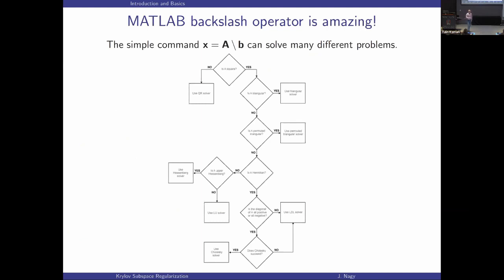I don't know if anybody's seen this before — it's the backslash flowchart from MATLAB. I love backslash because it does so many different things. You just say backslash A and B and it does something for you. It checks whether it's a square matrix; if not, it does some sort of QR solver. If it's square, it figures out if it's triangular and uses a back-solve or forward solve, or checks if it's Hermitian and considers Cholesky. It does all of this for you — such a wonderful command.